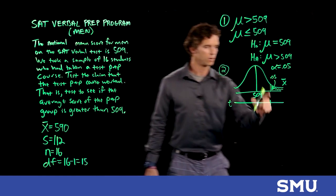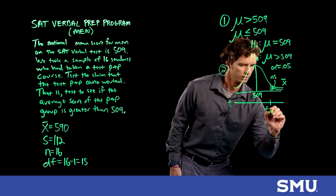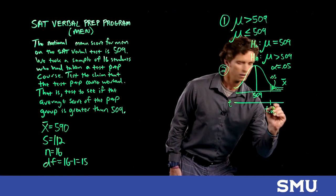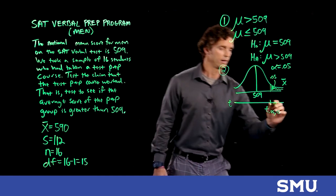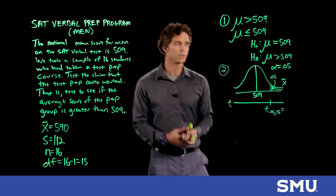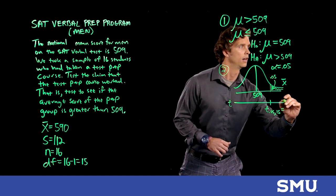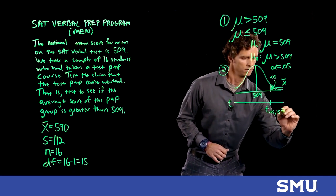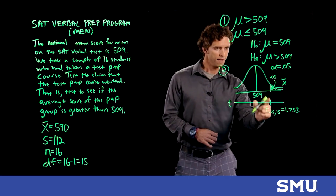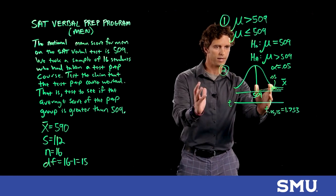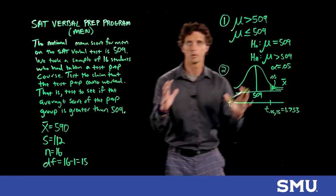This critical value is written as t(0.05, 15). If you look that up in your t-table, you get a t of 1.753. That value separates the bottom 95% from the top 5%. Notice we haven't even looked at the data yet.